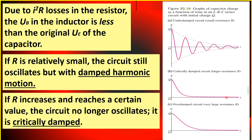What happens if the value of R is still increased further? Then we say that the oscillation is in an overdamped situation, or the circuit is overdamped. This happens if the value of R is very large, and as shown in the graph, there is a slow decrease in the amount of charge as time passes. So take note of the terms underdamped, critically damped, and overdamped — these three illustrations illustrate those kinds of damping.